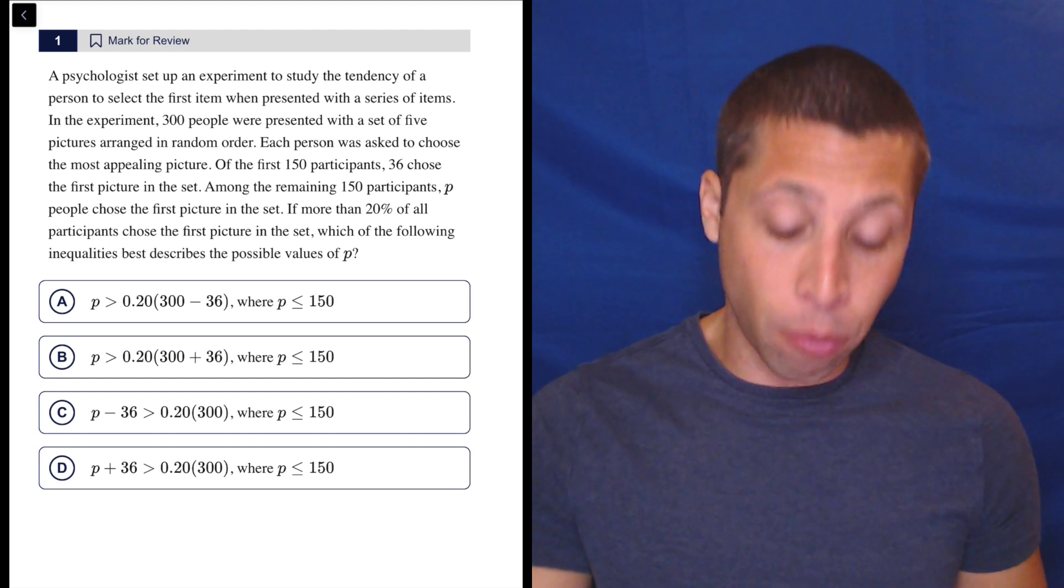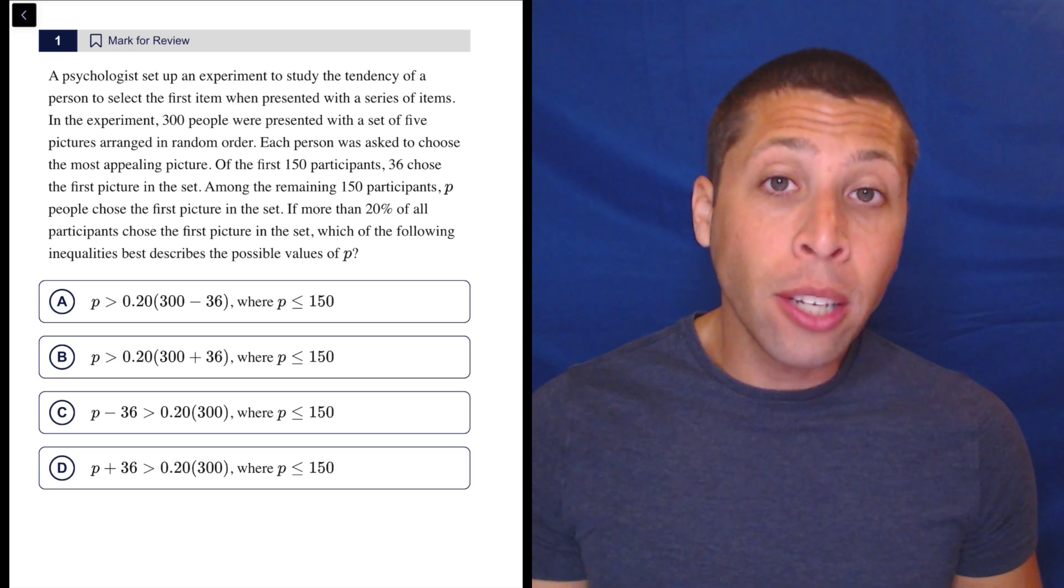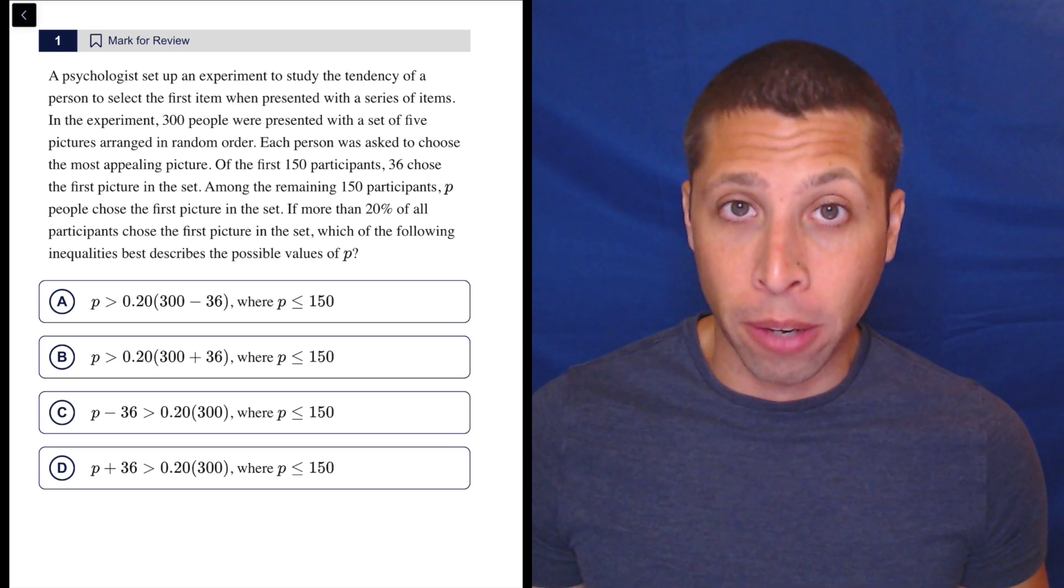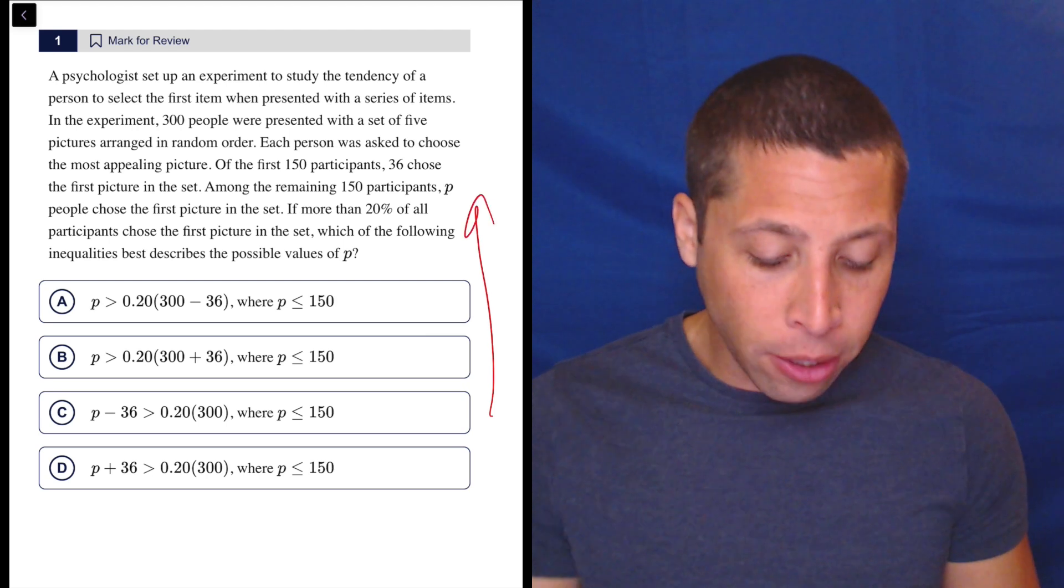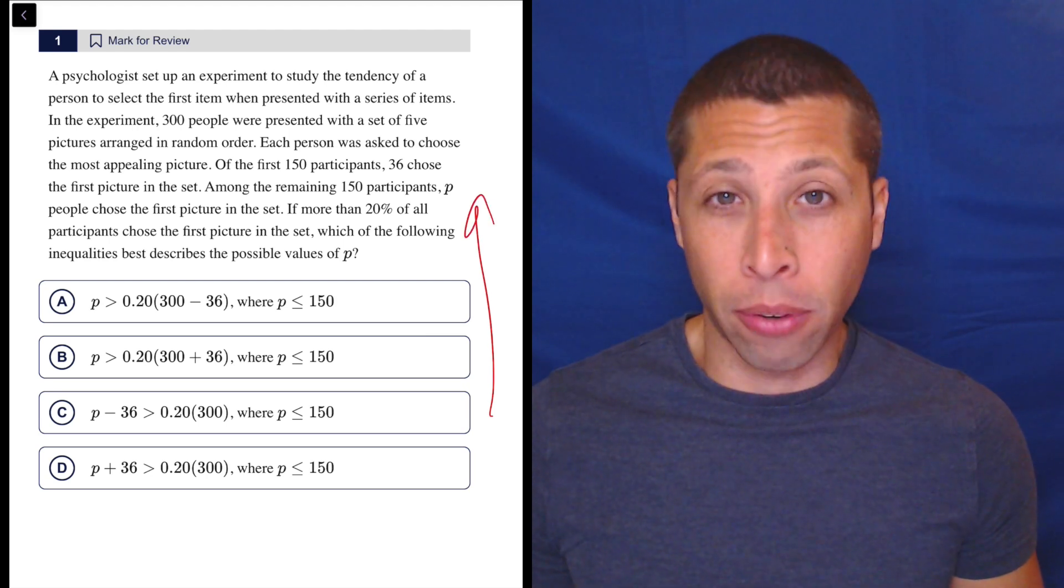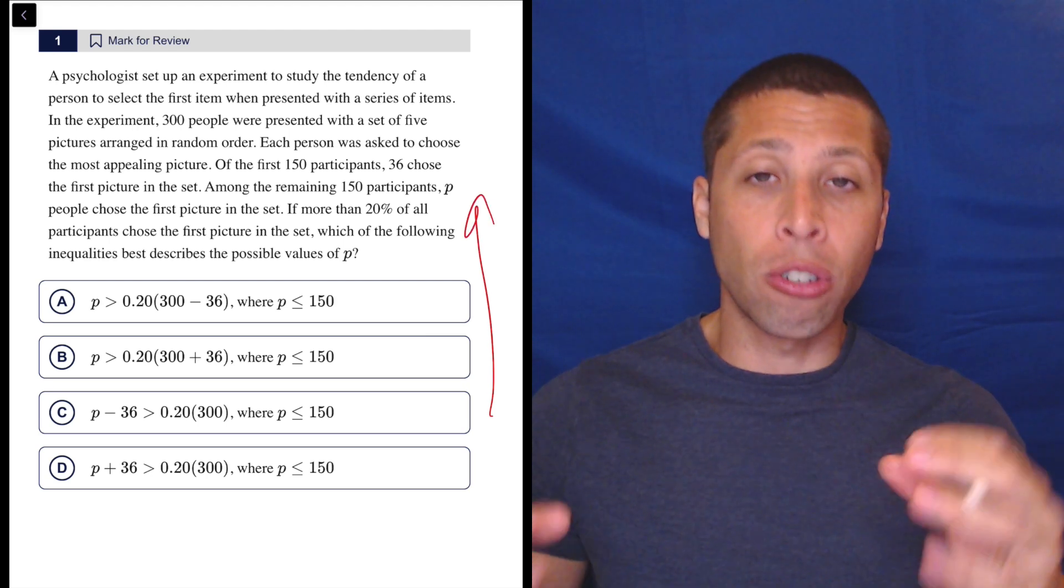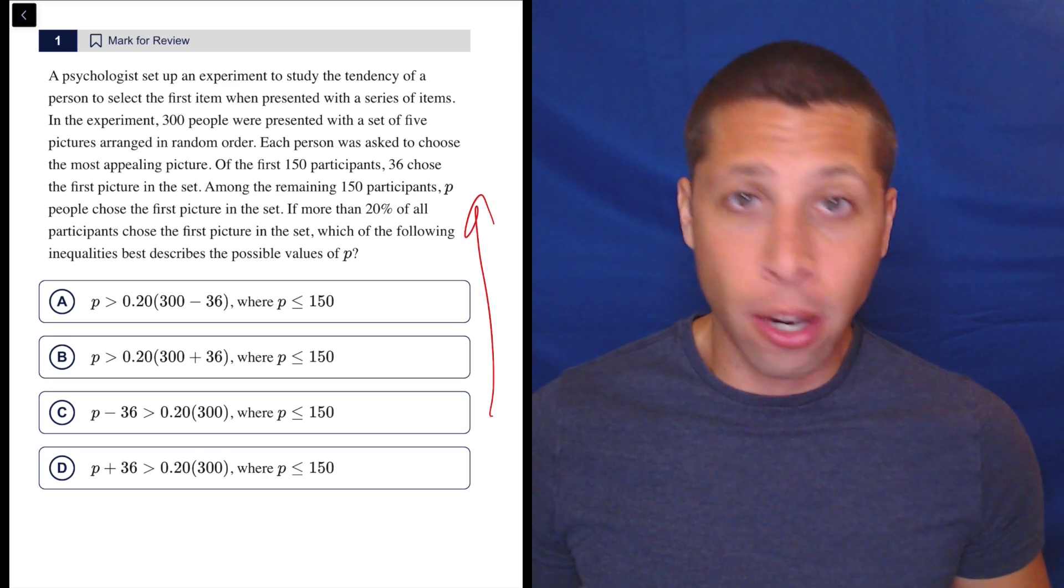I think a big mistake people make is they read the story and they try to understand the story to build an equation. That's very difficult. What I do is I go backwards. I look at these equations and I think, well, what's different? Let me break this down into certain choices that I might need to make or think about.